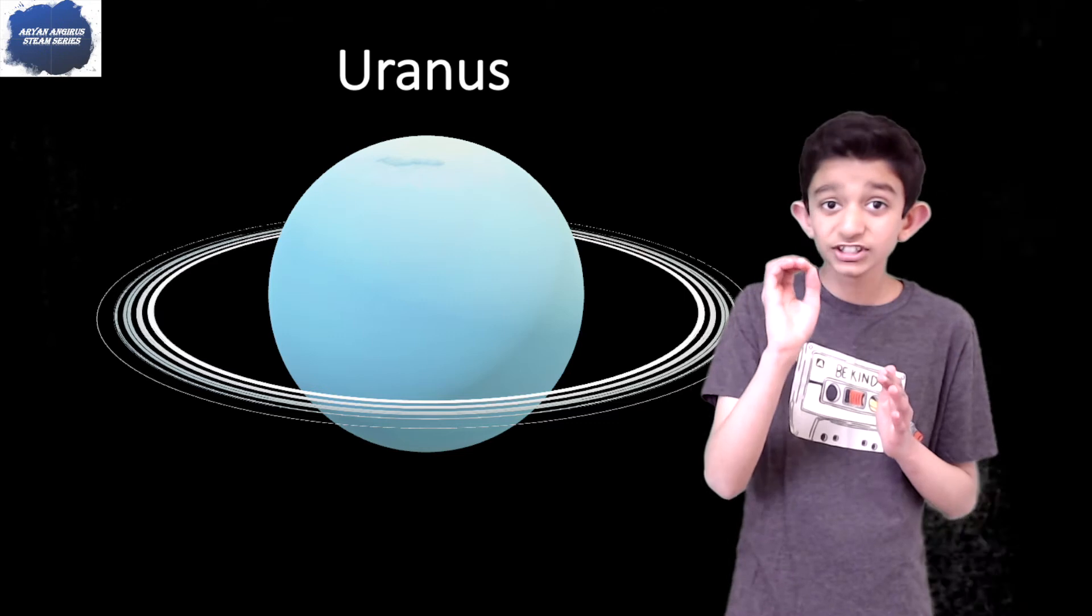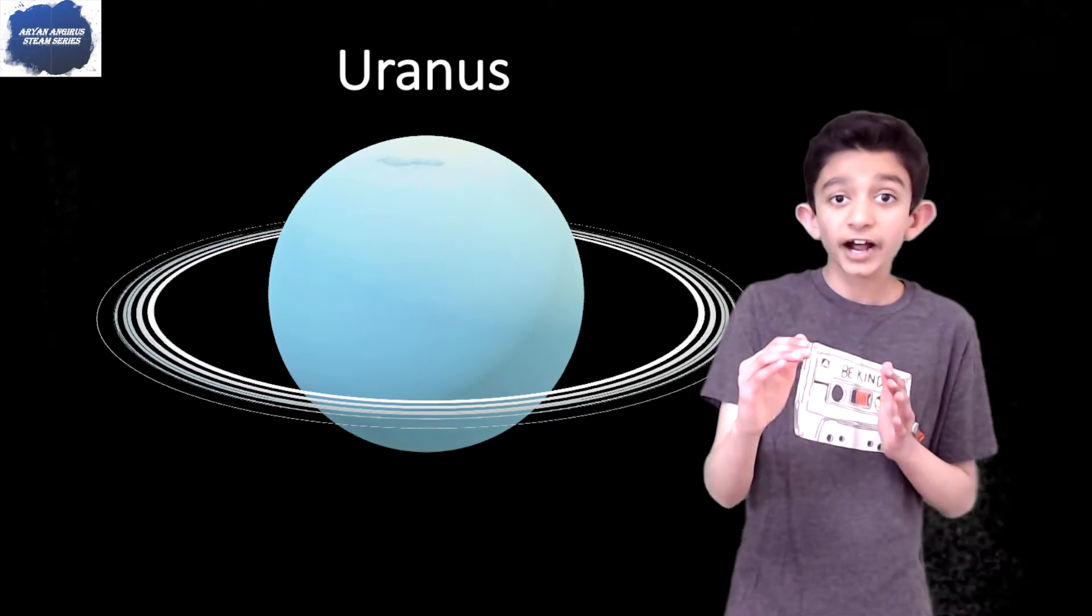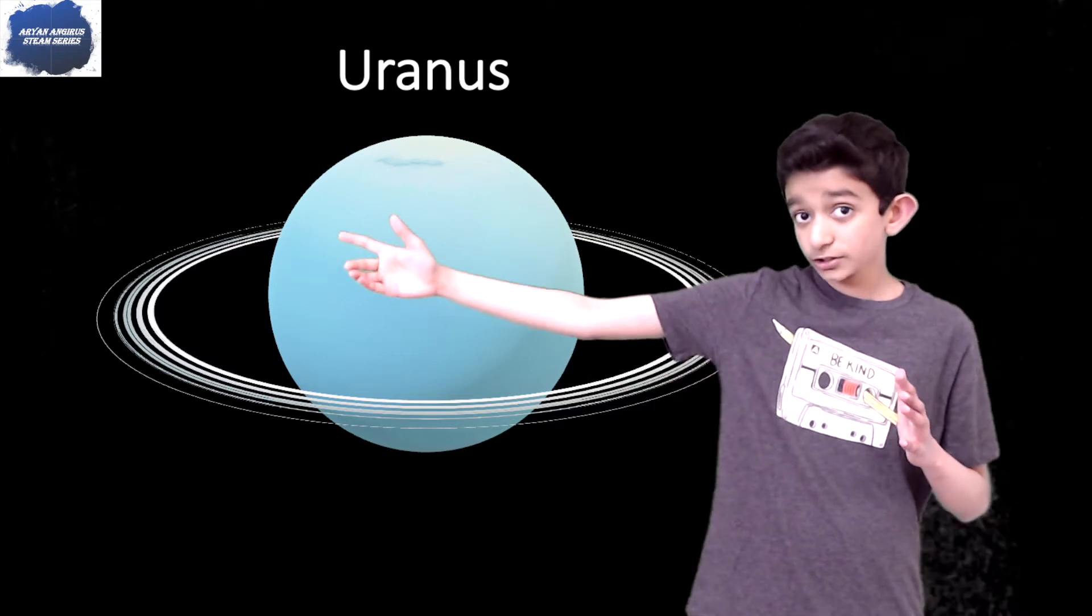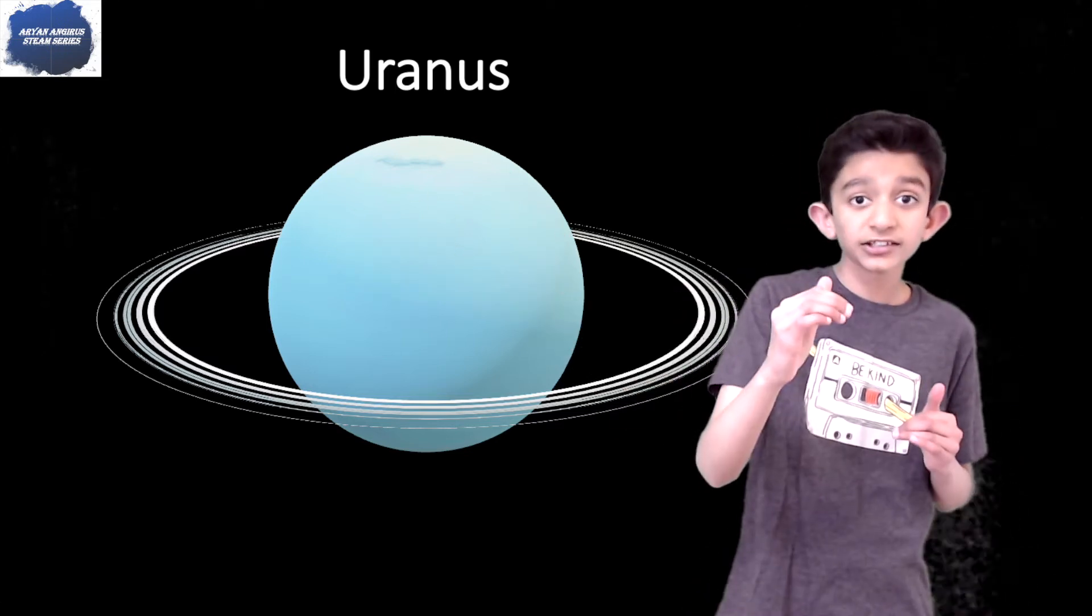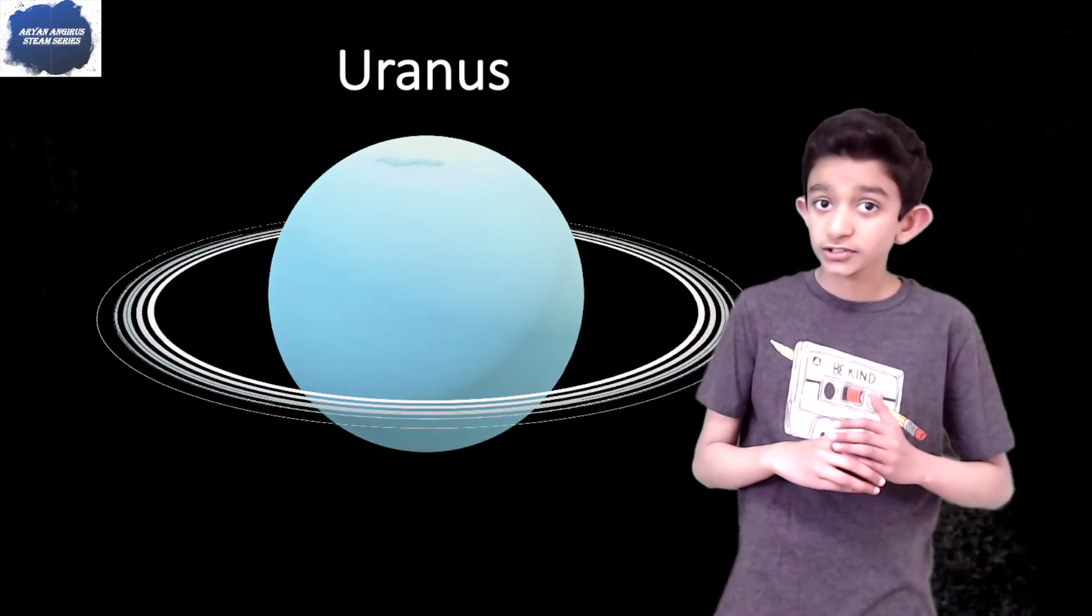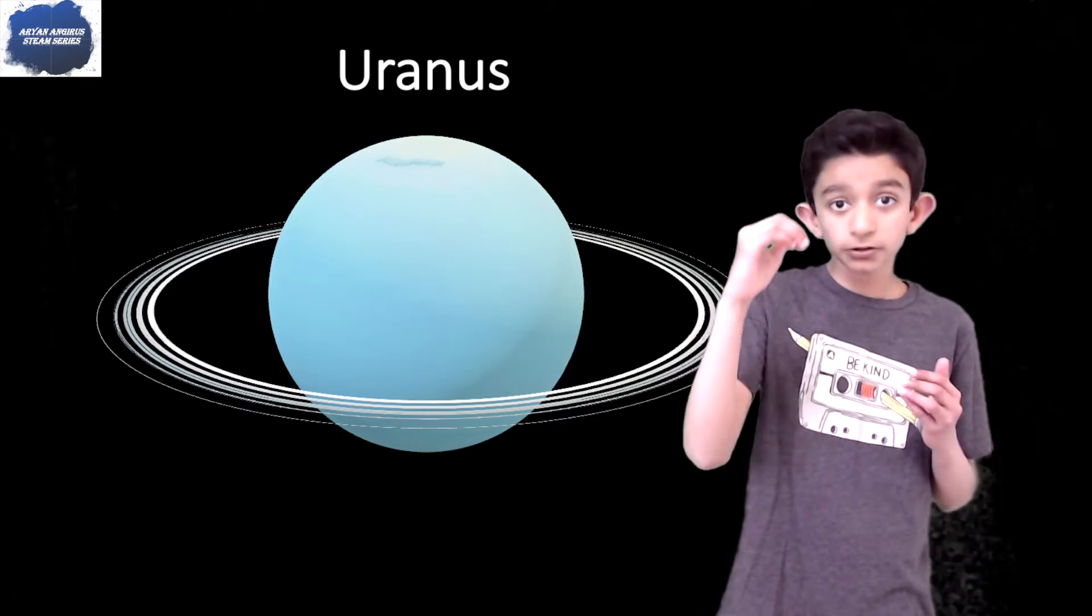That's what makes it an ice giant, unlike gas giants like Saturn and Jupiter. Both Uranus and Neptune are called ice giants because they're one of the coolest planets in our entire solar system, if you're not considering Pluto.